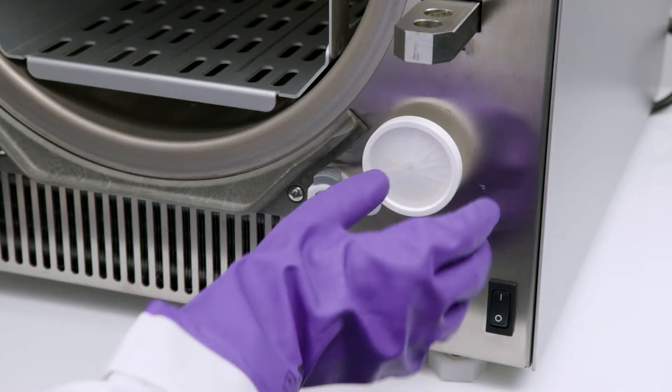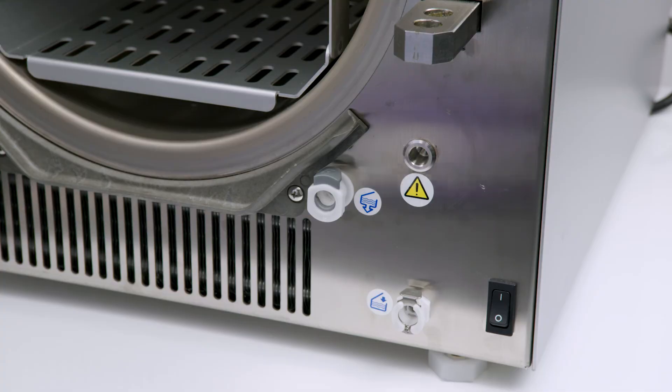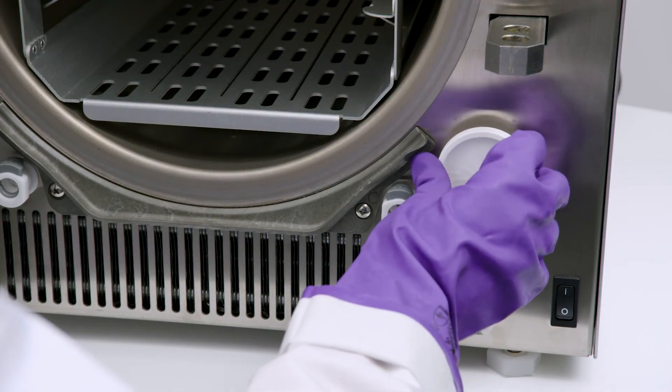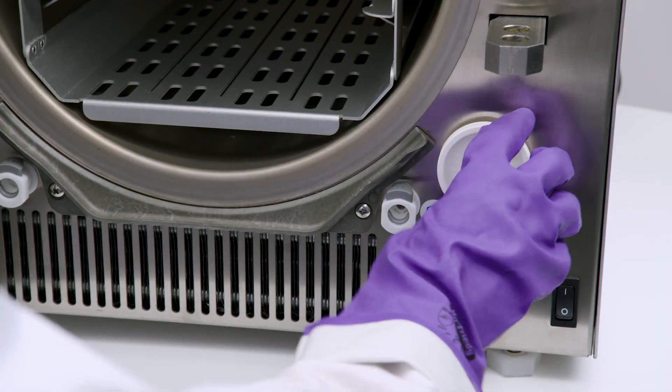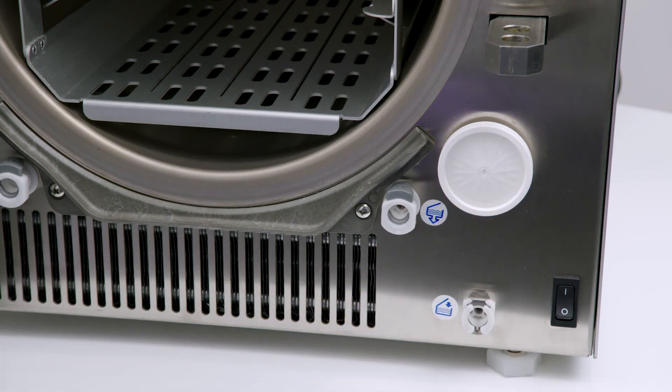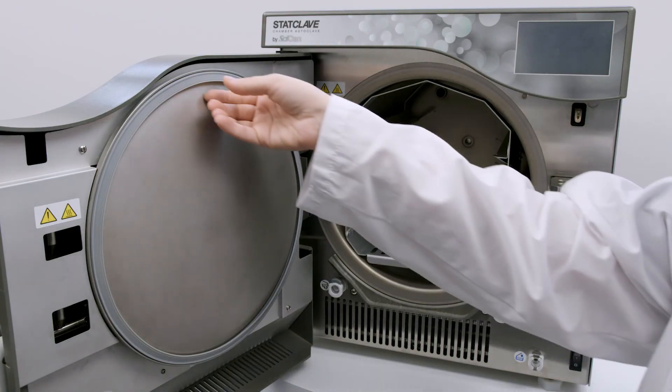Every six months or after 500 cycles, you should perform all the cleaning tasks listed in the monthly schedule. Also replace the bacteriological air filter and replace the door seal.